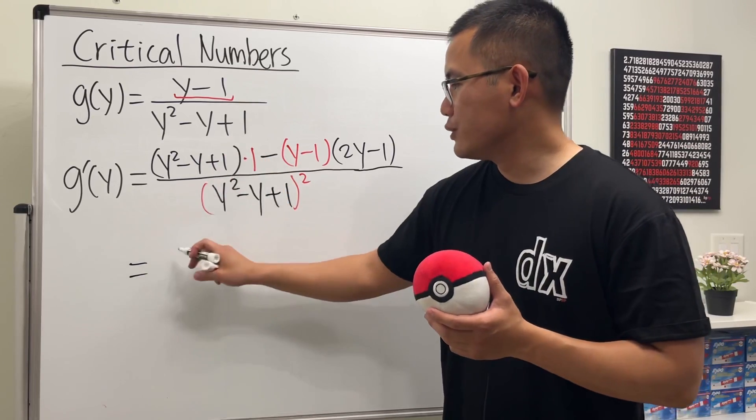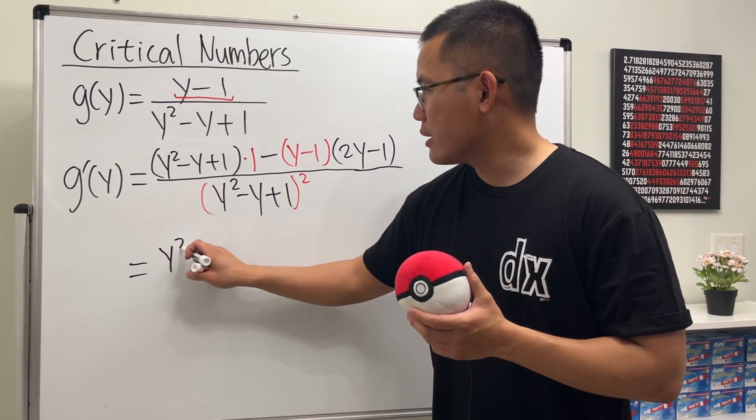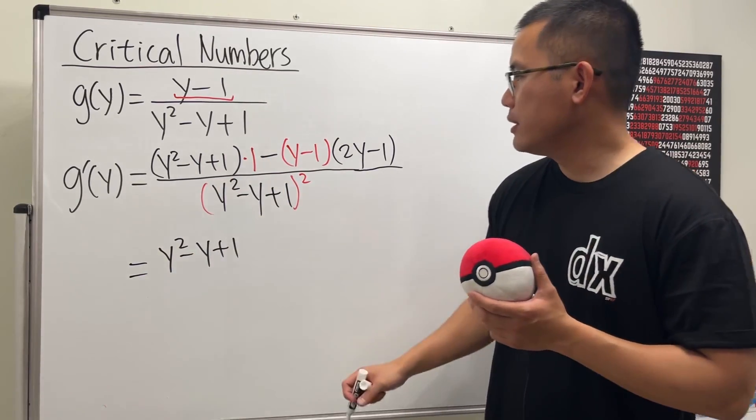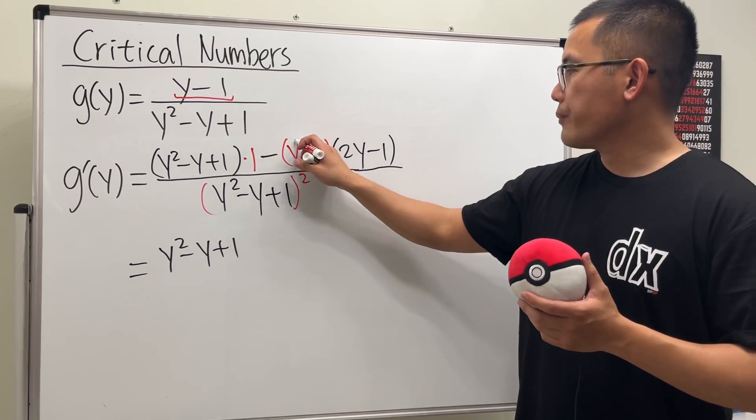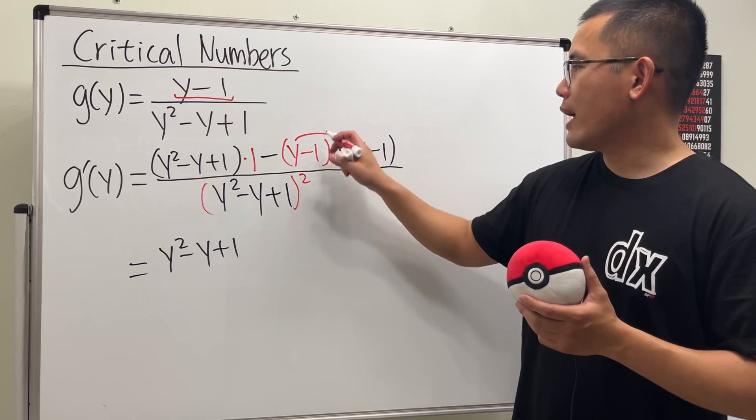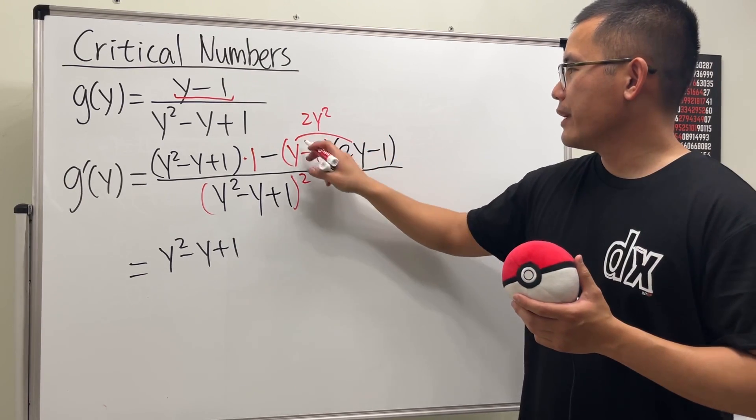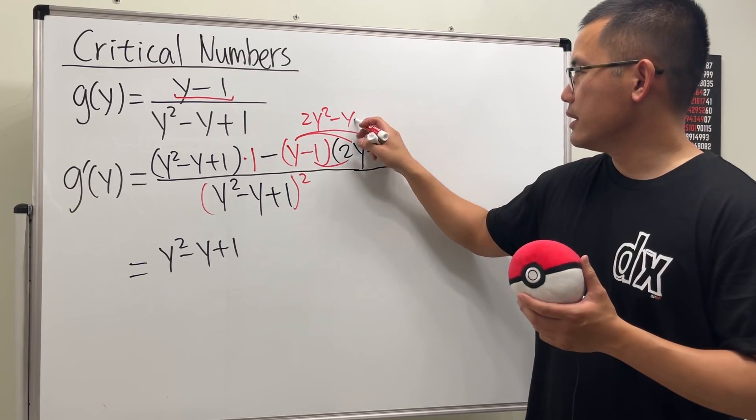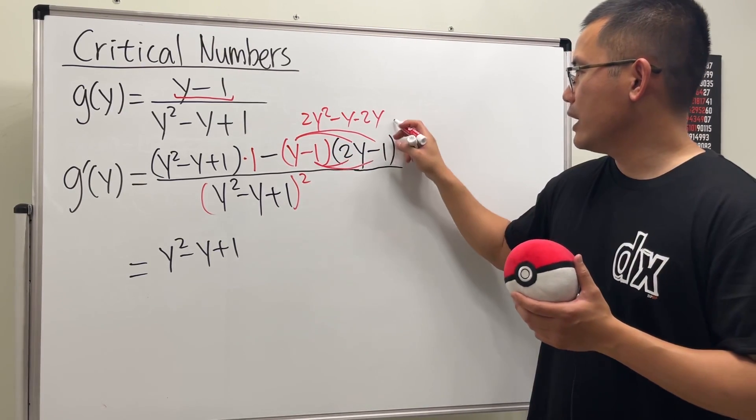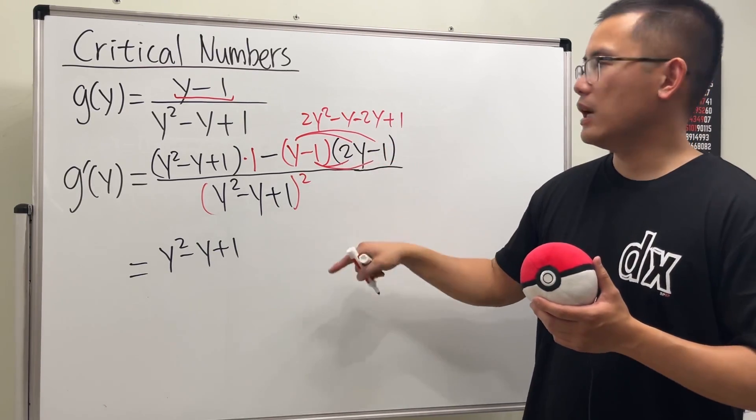On the top, this times 1 is just that, so y squared minus y plus 1, no big deal. And then I'll multiply this right here and then distribute the negative. So y times 2y is 2y squared, and then this times this is negative y, and this times this is negative 2y. And lastly, we have the plus 1. So just work that out.